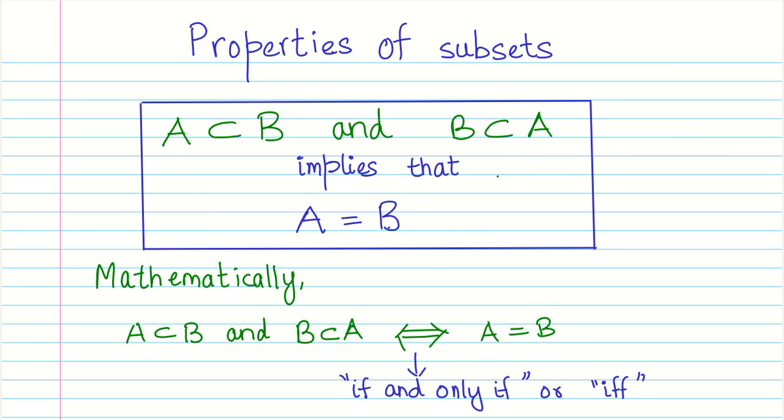Now let us look at a third and a very important property. Let us say we have a situation where we say that A is a subset of B, and we also find out that B is a subset of A. Now if this kind of situation arises, it implies that A has to be equal to B.